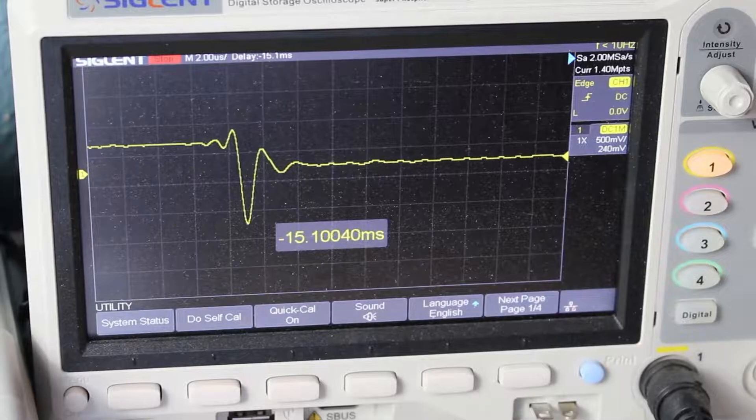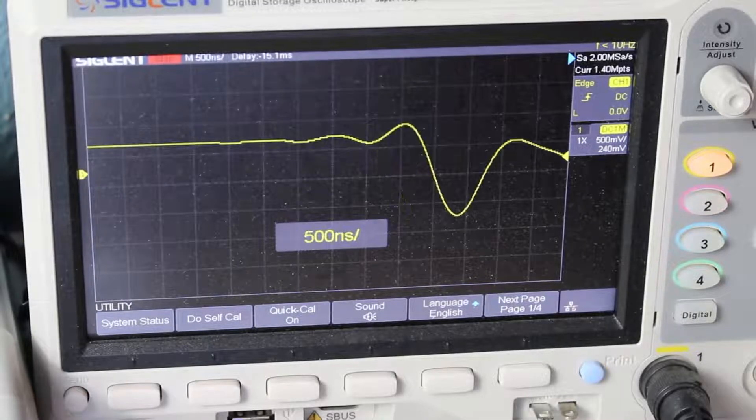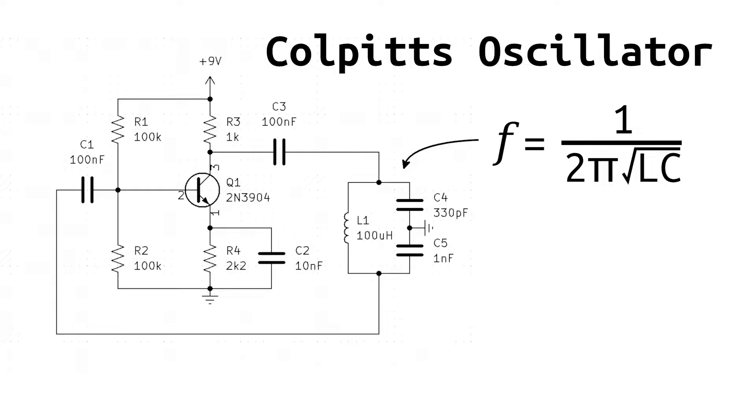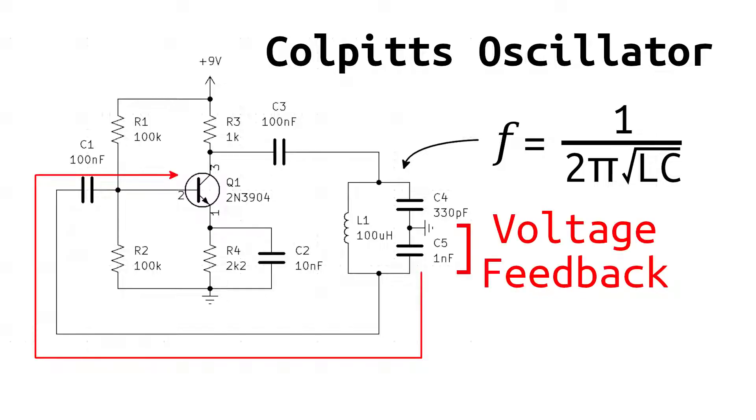We can use a transistor as the amplifier that will refill the LC tank. So here's the complete Colpitts oscillator. The reason why I split the capacitor up into two different parts with ground in the middle is because we should give a voltage feedback with respect to ground from the LC tank, so that the transistor can refill it at the correct time. The LC tank is still calculated in the same way, just calculate the capacitance in series instead.